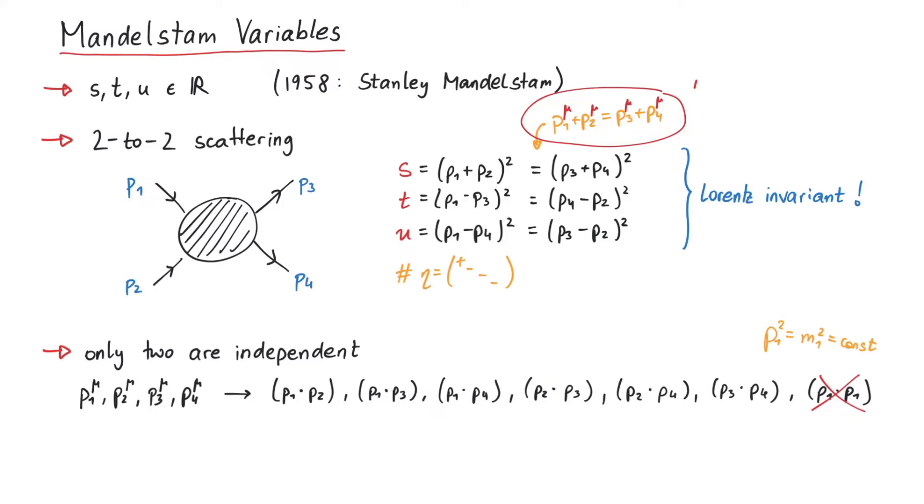Next, four-momentum conservation gives us four equations that constrain the independence of those six quantities. Therefore, out of the six quantities, four can be written in terms of the others and only two independent ones remain.